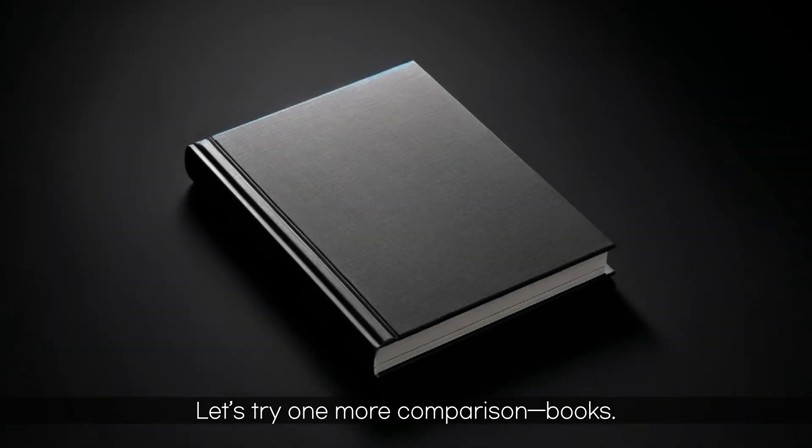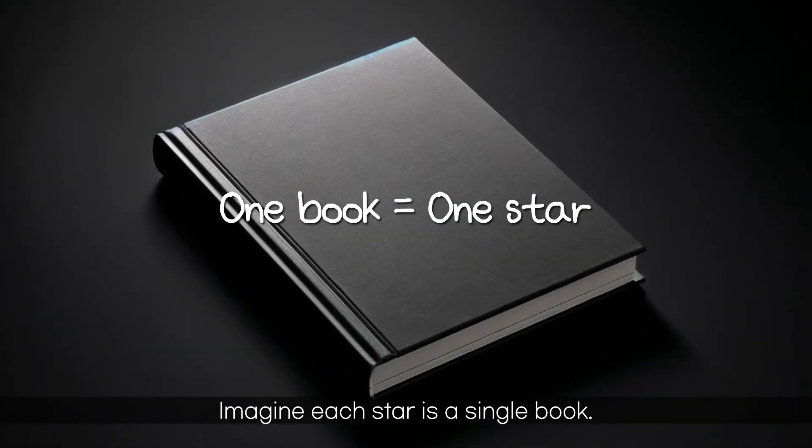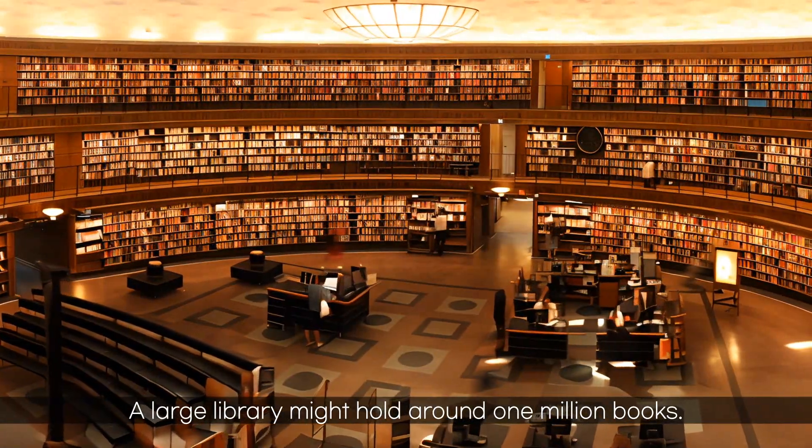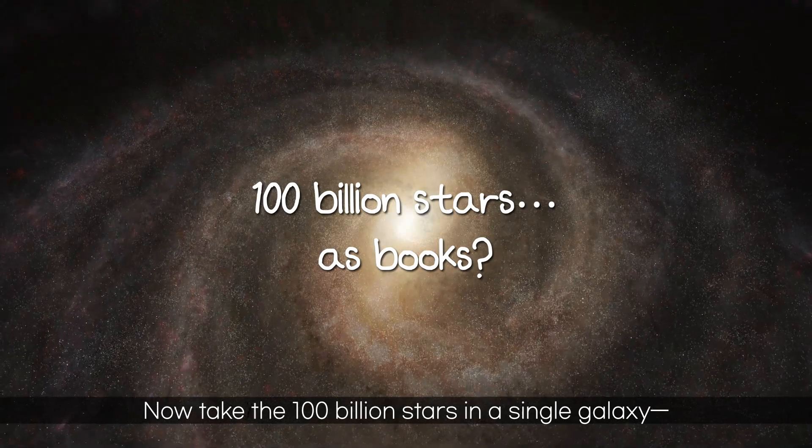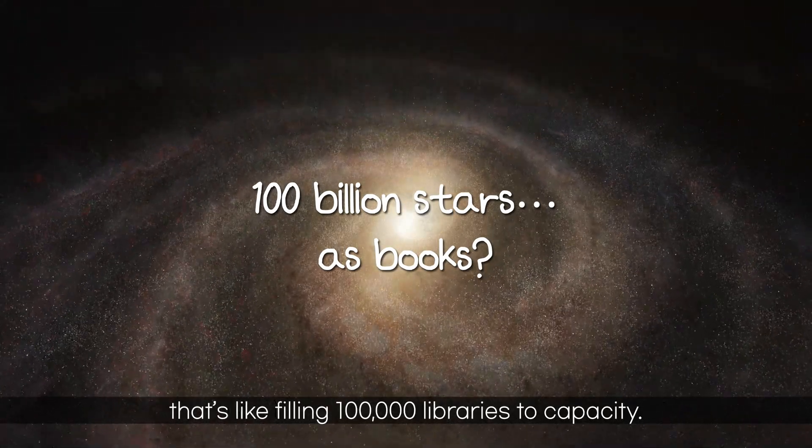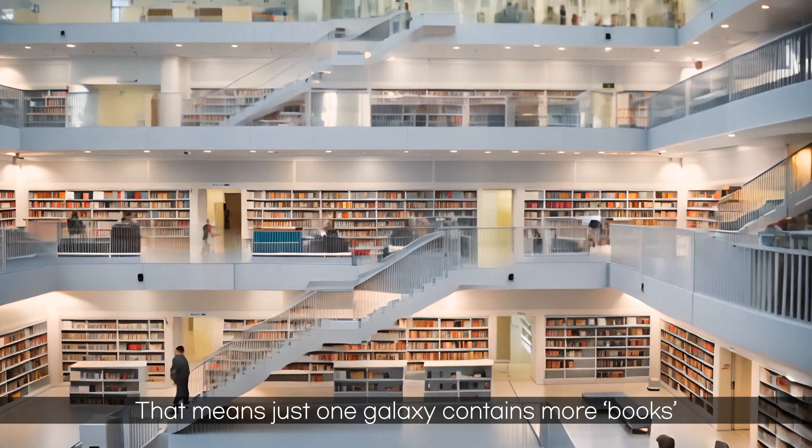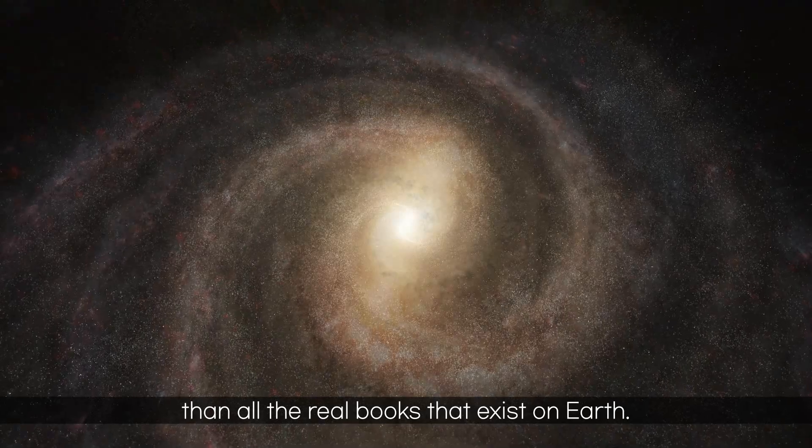Let's try one more comparison. Books. Imagine each star is a single book. A large library might hold around 1 million books. Now take the 100 billion stars in a single galaxy. That's like filling 100,000 libraries to capacity. That means just one galaxy contains more books than all the real books that exist on Earth.